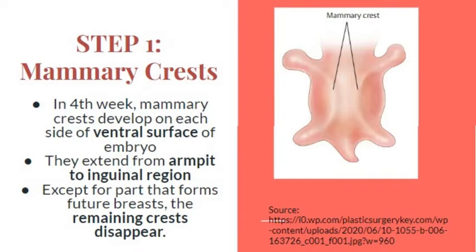of the ventral surface of the embryo. They extend from the armpit to the inguinal region. Except for the part that forms the future breast, the remaining crest disappears. In the figure, you can see the mammary crests are two lines on the ventral surface of the embryo that extend from the axilla to the inguinal region.